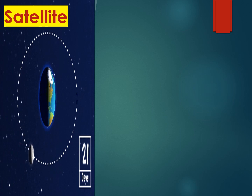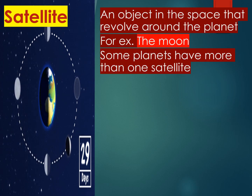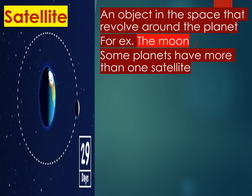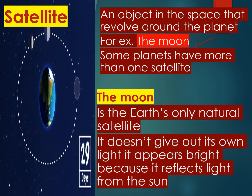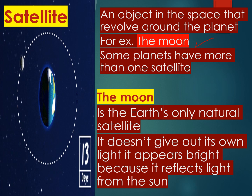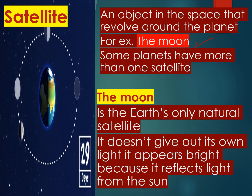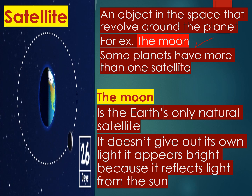There is another thing. An object in the solar system called a satellite. The satellite is an object in space that revolves around a planet. For example, the moon. Some planets have more than one satellite, but on Earth we have only one satellite called the moon. As you can see in this image, the moon is Earth's only natural satellite and it revolves around the Earth. It doesn't give out its own light, but it appears bright because it reflects the sunlight from the sun.